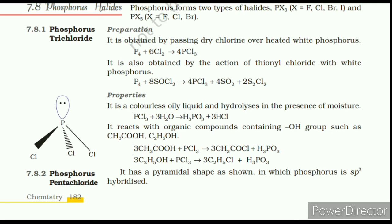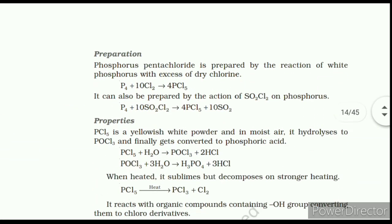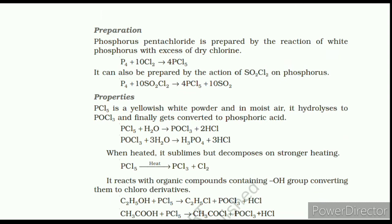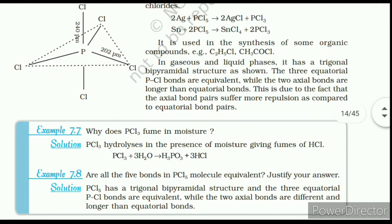Phosphorus Pentachloride Preparation: PCl₅ is prepared by the reaction of white phosphorus with excess of dichlorine. It can also be prepared by the action of SO₂Cl₂ on phosphorus. Properties: PCl₅ is a yellowish-white powder and is unstable in moist air. It hydrolyzes with POCl₃ and finally gets converted into phosphoric acid. When heated it sublimes but decomposes on strong heating. It reacts with organic compounds containing OH groups, converting them to chloro derivatives. Finely divided metals on heating with PCl₅ give corresponding chlorides. It is used in synthesis of some organic compounds. In the gas and liquid phases it has a trigonal bipyramidal structure; the three equatorial P–Cl bonds are equivalent while the two axial bonds are longer than the equatorial bonds, due to greater repulsion experienced by axial bond pairs.